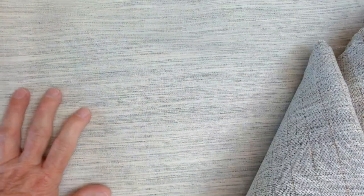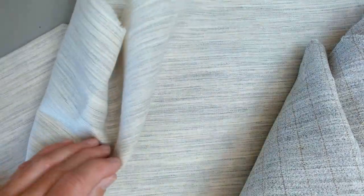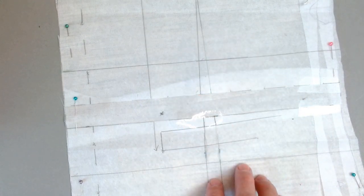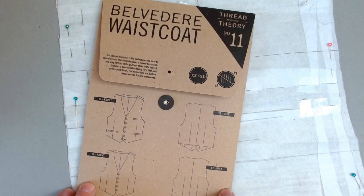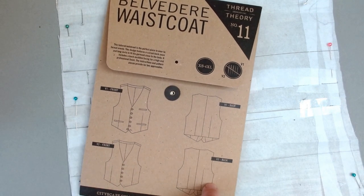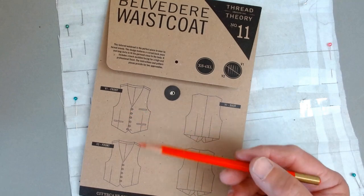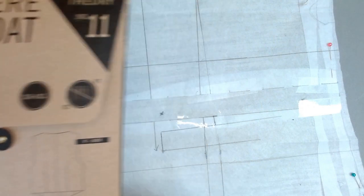I'm going to be using this lighter weight as part of the demonstration on how to put a dart into this fabric that doesn't want to crease or bend. In this demonstration, I'm going to be working on the front piece of a vest. This is the Belvedere waistcoat by Thread Theory. I think you can see by the line drawings that this vest has a dart on the front. It also has darts on the back. It's quite a fitted vest.